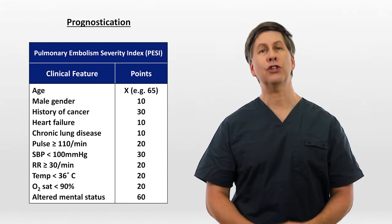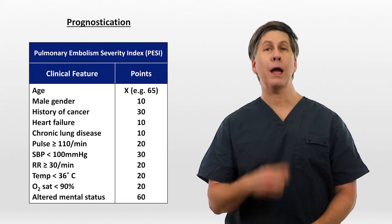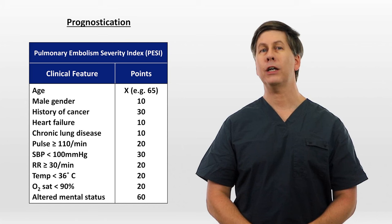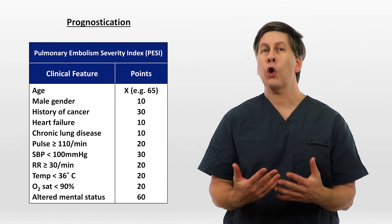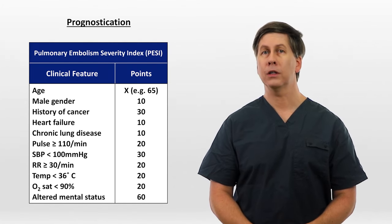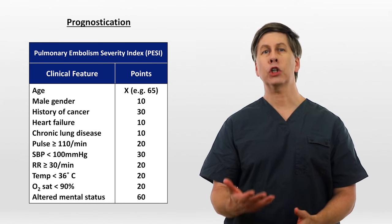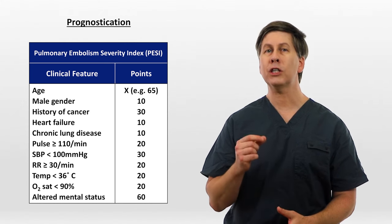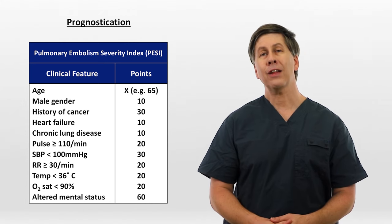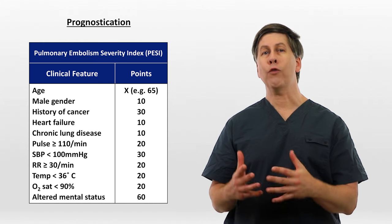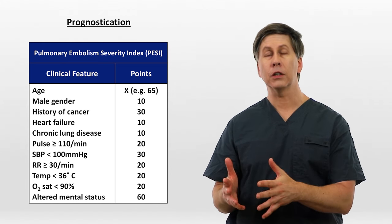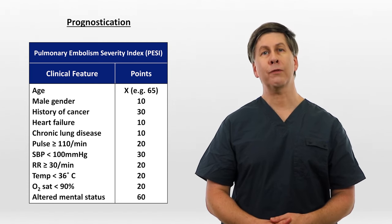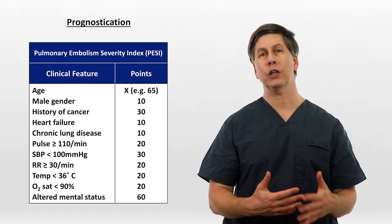The PE Severity Index is not without critics. The most notable criticism is that it places large emphasis on the patient's age and relatively low emphasis on signs of acute physiologic compromise — so an elderly person with dementia and a history of cancer will have an unusually high score even with a trivially small PE. It considers 30-day overall mortality rather than 30-day PE-specific mortality, which may be more relevant for some treatment and triage decisions.